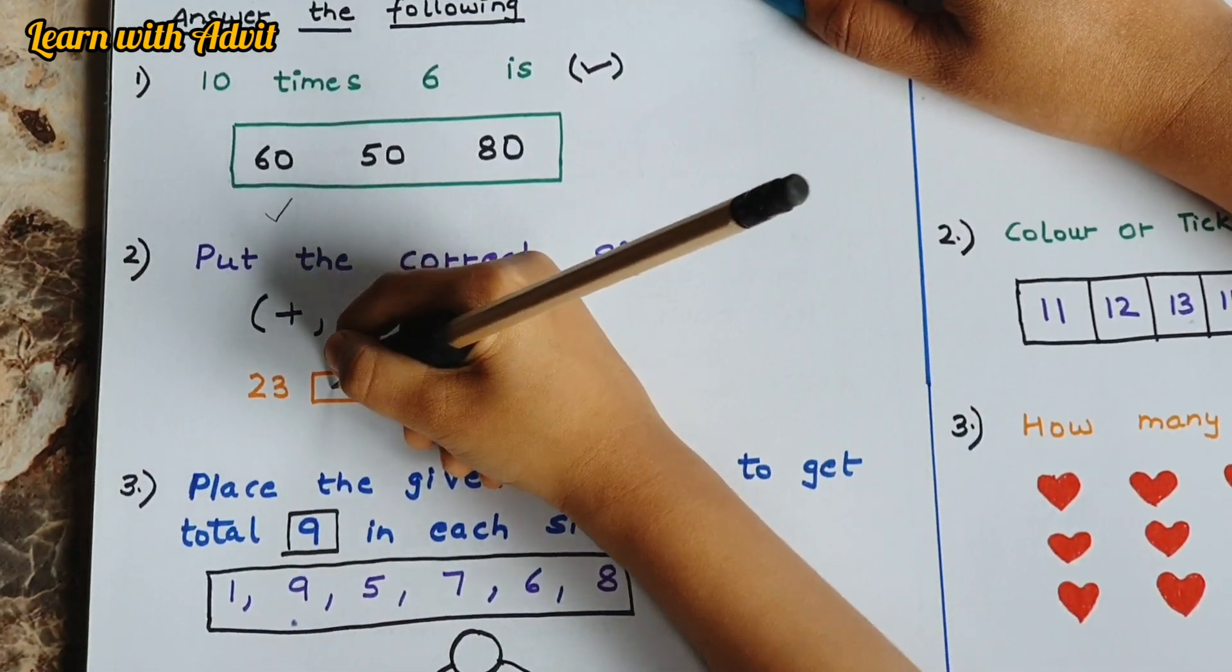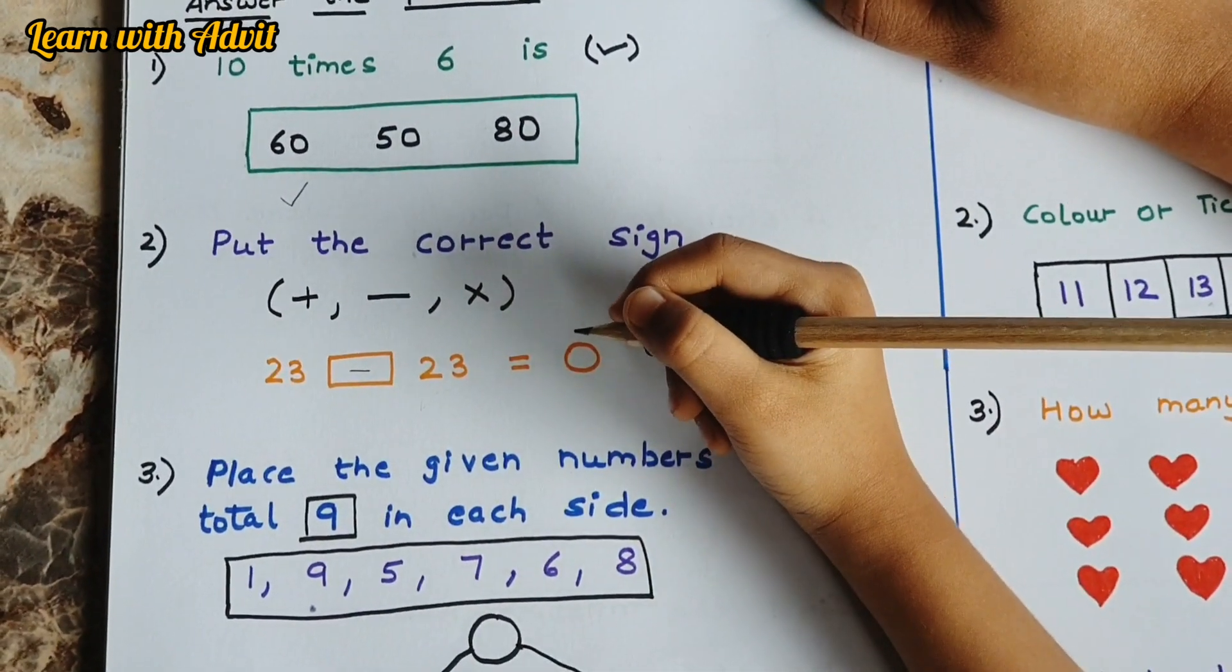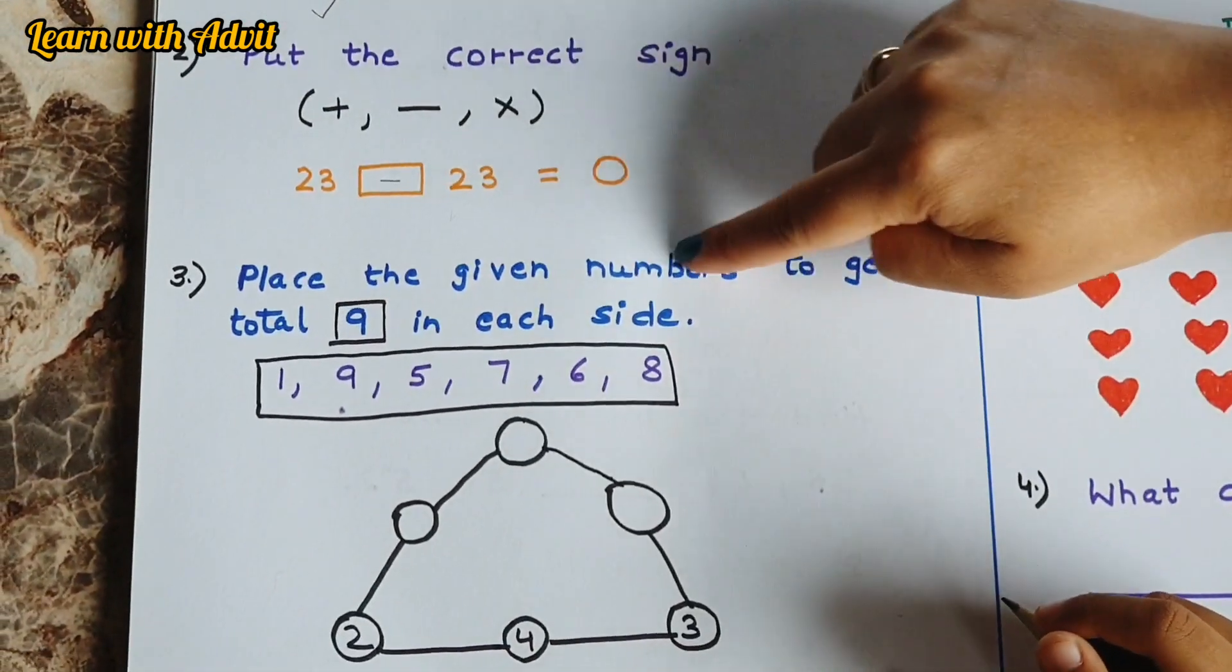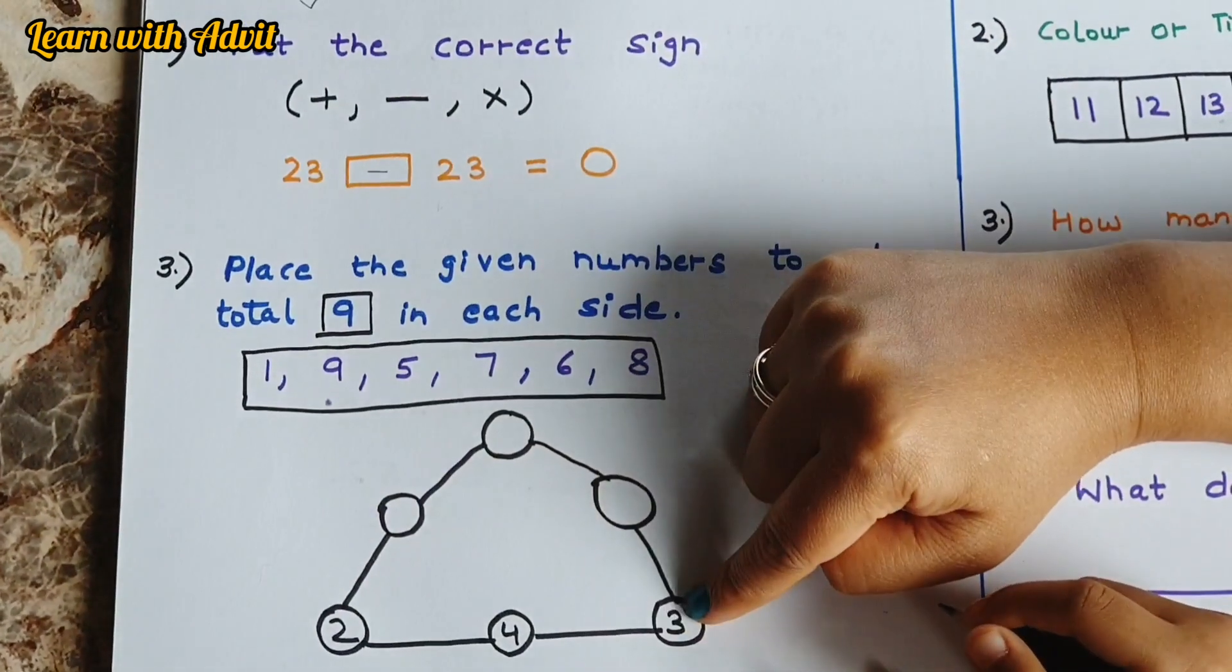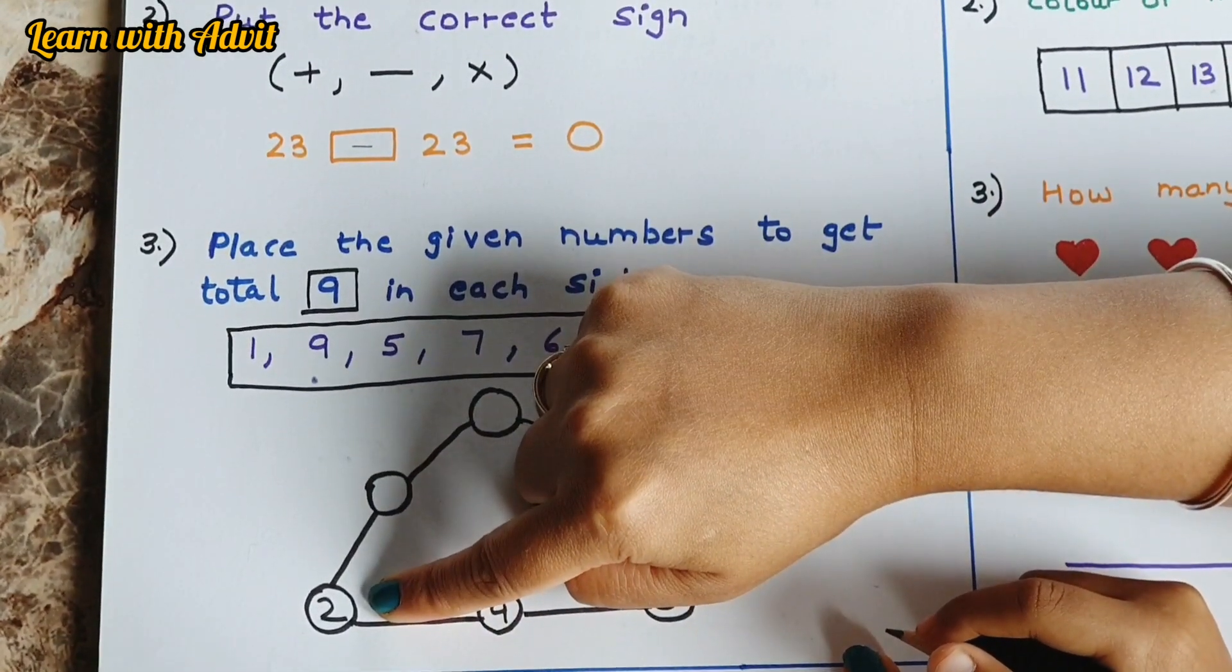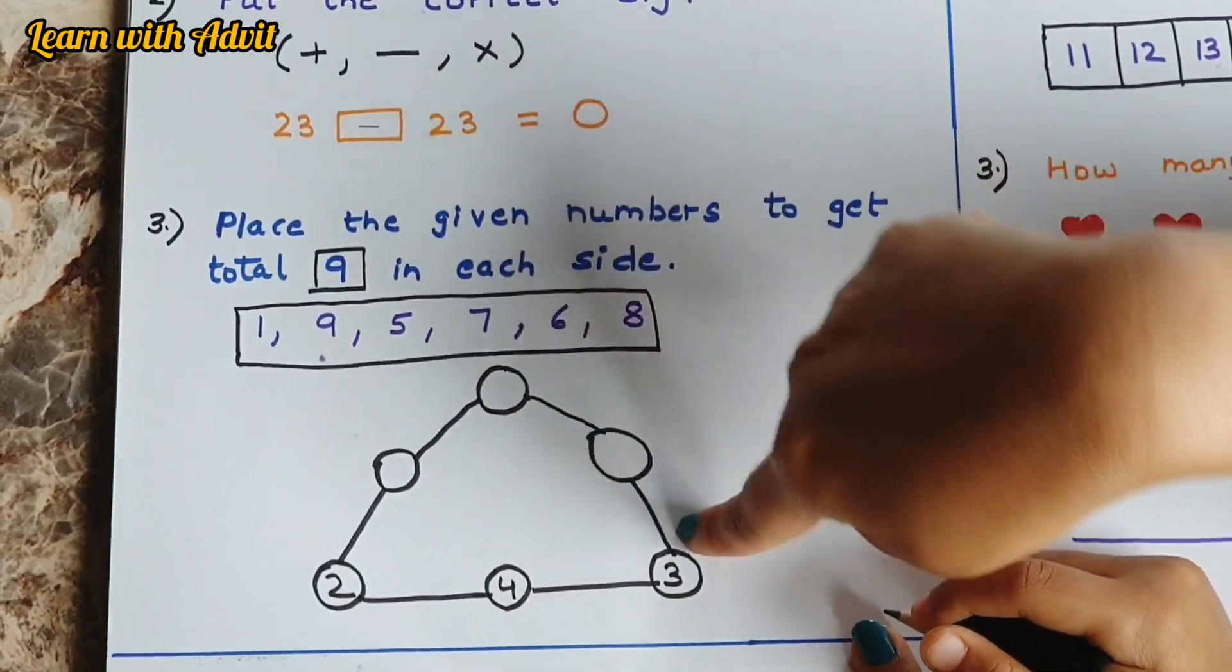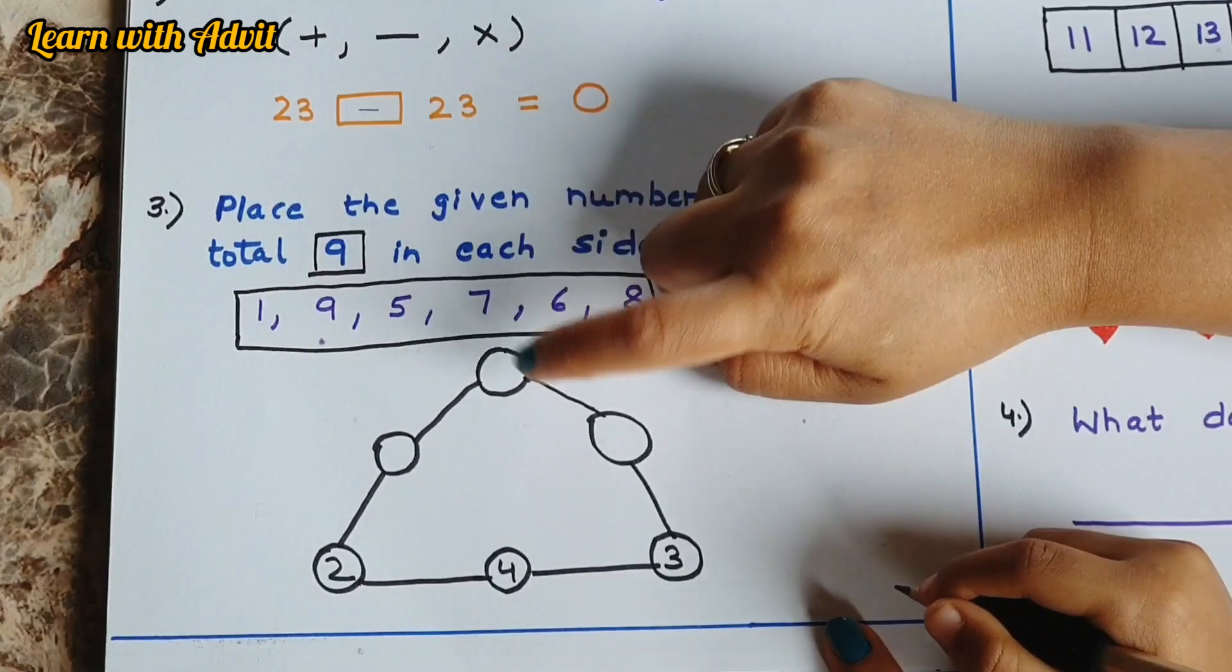Here is an equation. You have to put the correct sign. 23 minus 23 equals 0. Very good. Here is a question for the magic triangle. Place the given numbers to get total 9 in each side. I love magic triangles. Very good. Like this, 4 plus 3 is 7, and 7 plus 2 is 9.